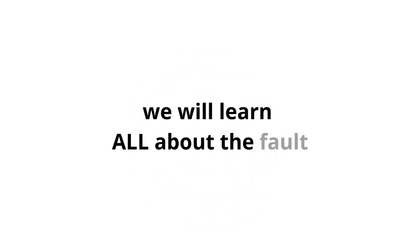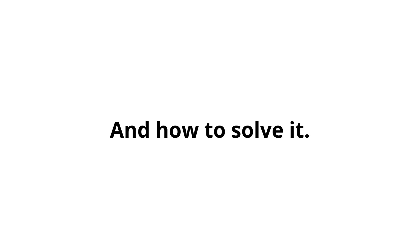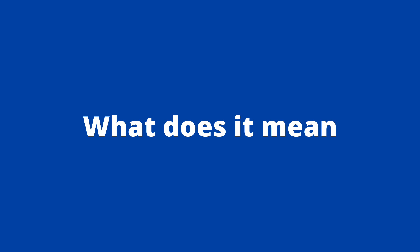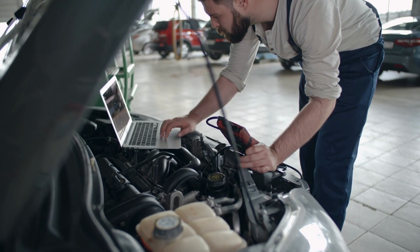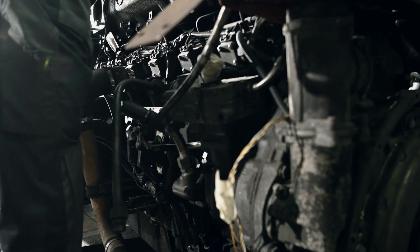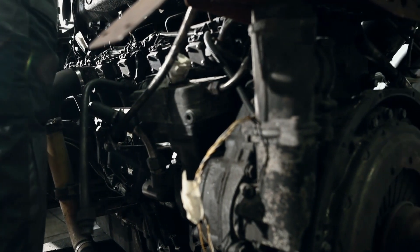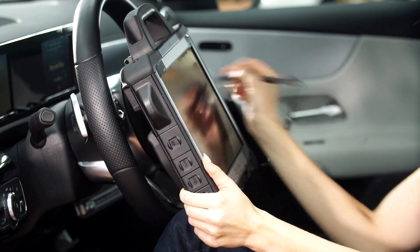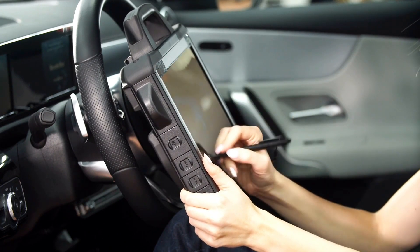In this video, we will learn all about the fault P0700: what does it mean, symptoms, causes, and how to solve it. We also respond to frequent questions related to this error. The P0700 error code refers to a problem with the vehicle's transmission control system. It may be a warning of a possible fault with the transmission system or an indication of a problem with the transmission controller.